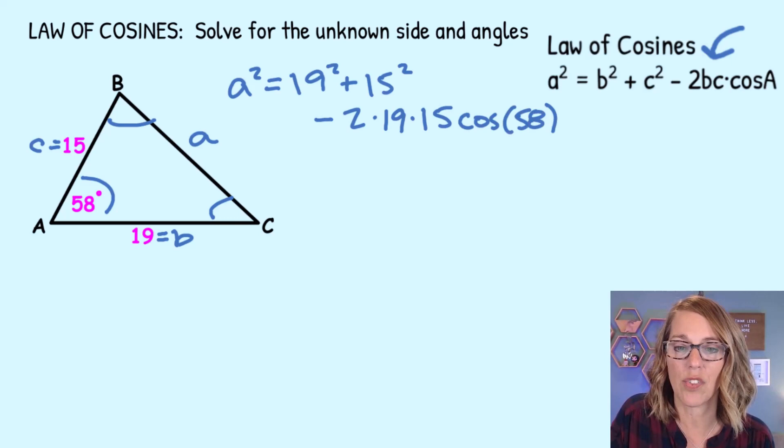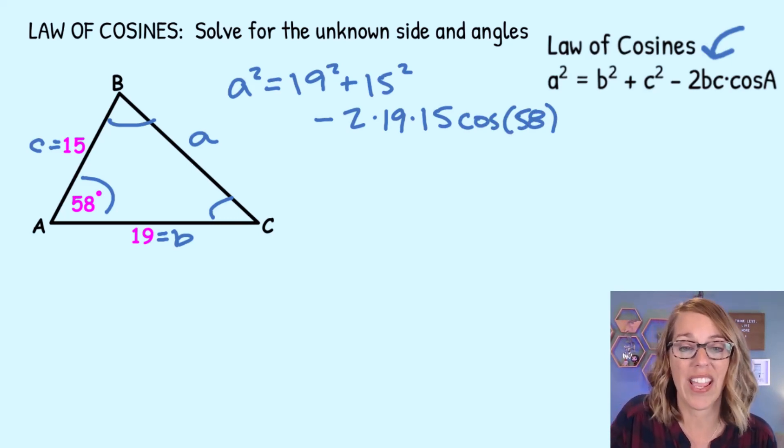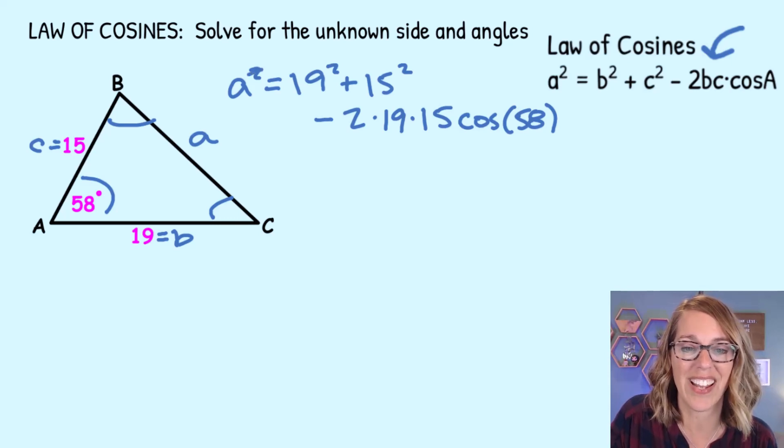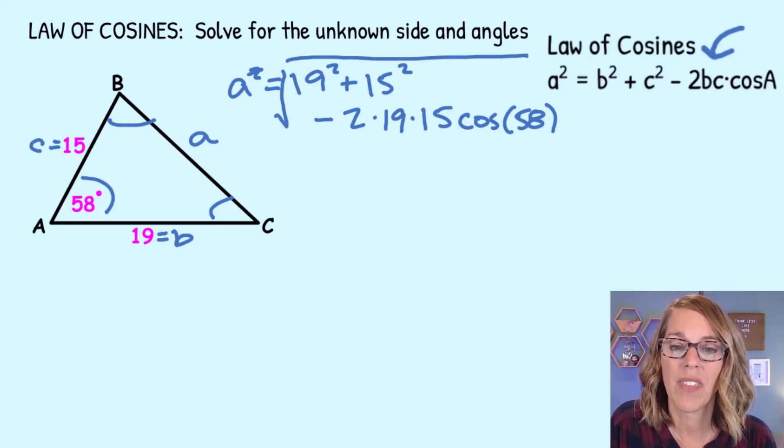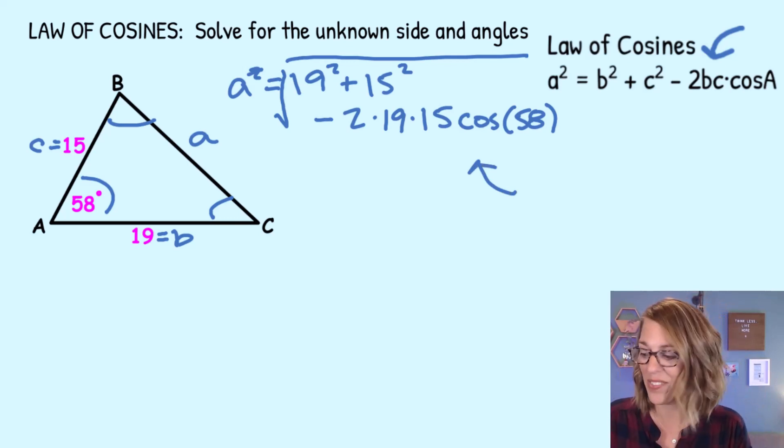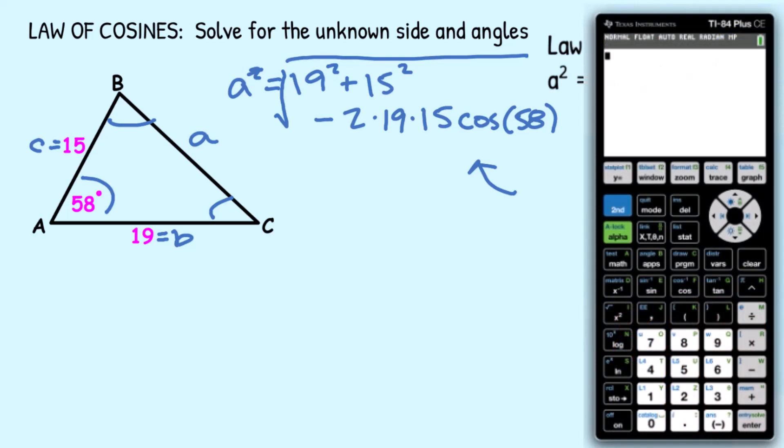Minus 2 times B times C times the cosine of angle A, which is 58 degrees. Now I've got this almost solved for A. I'm going to just take a square root. If I take a square root on this side, I get A by itself, and I've got a square root on this side as well. I'm going to go ahead and put all of this into my calculator, and we'll have side A.